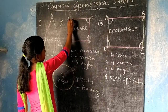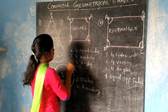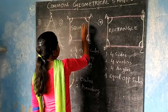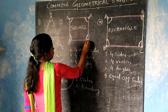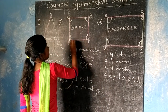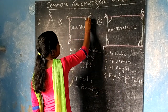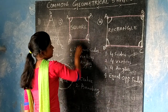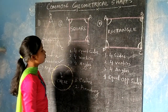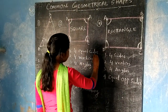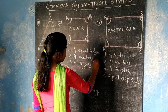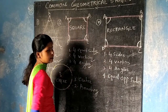All sides are equal. AB is equal to DC, and AD is equal to DC. So it is called a square. It has four equal sides, four vertices and four angles.